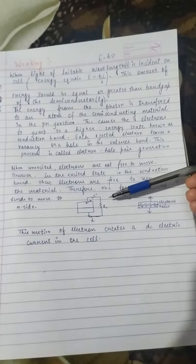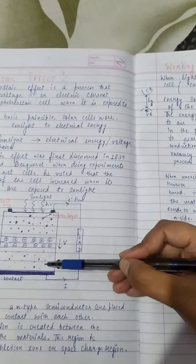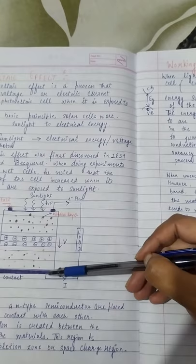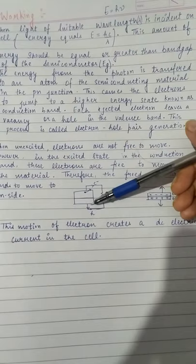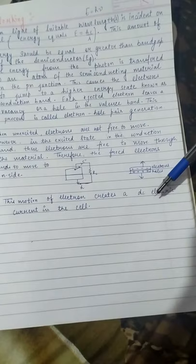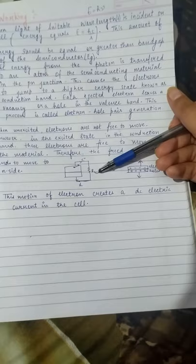If the electron is free, it will move to the N side, causing electron flow in the circuit, while holes will move to the P side — opposite directions due to the depletion layer. Electrons flow from one terminal to the other, and if you have any load resistance connected, it will operate because of the current generated by the photons. This motion of electrons creates a DC electric current — not AC, it is a DC current. This is all about the photovoltaic effect and photovoltaic cell.